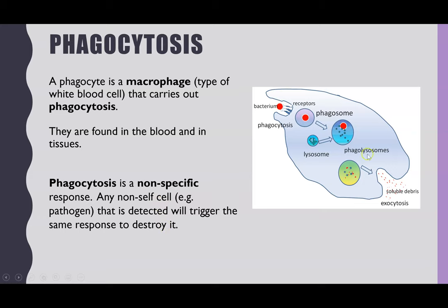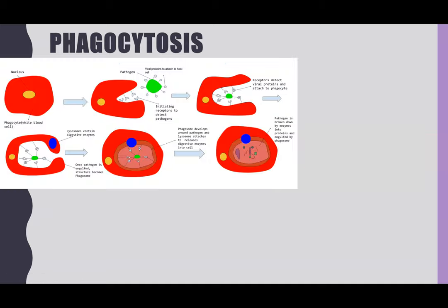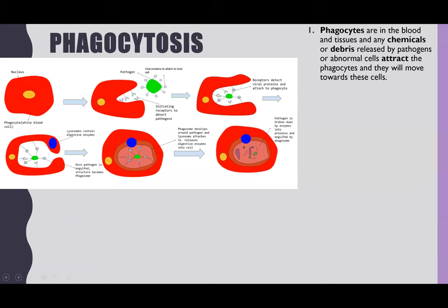Here we have a very basic overview, but we're going to go through it step by step in the detail needed for A-level, focusing on AQA. Step one: phagocytes are within the blood and tissues as we said. If they detect any chemicals — or debris released by pathogens or abnormal cells — that will attract the phagocytes and they will move towards the chemicals being released by this debris or the toxins.